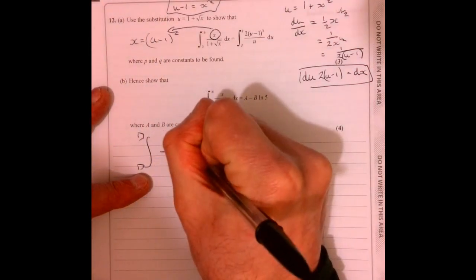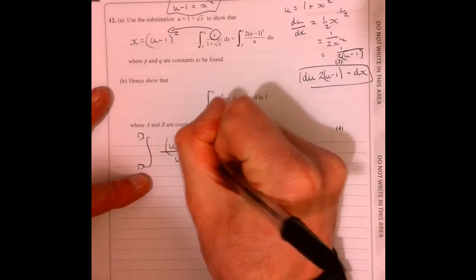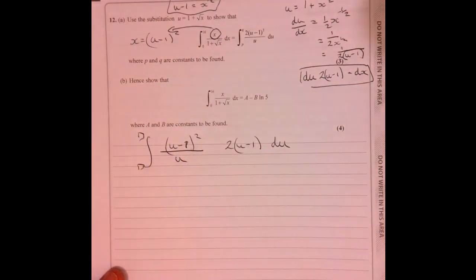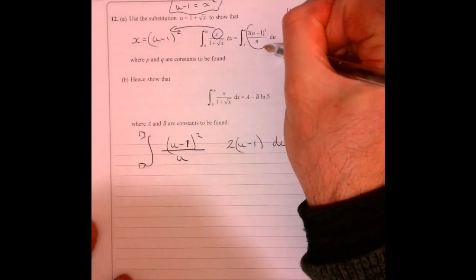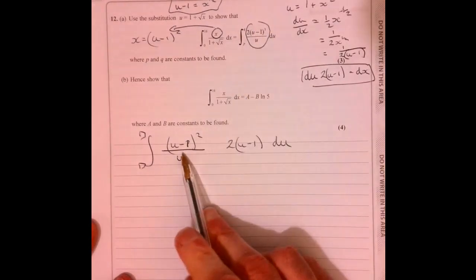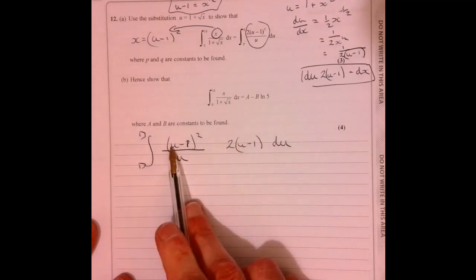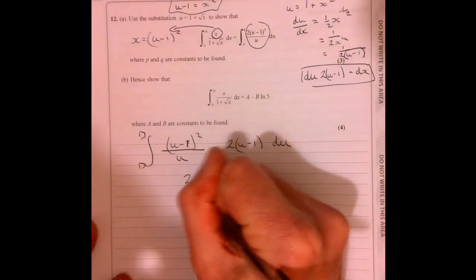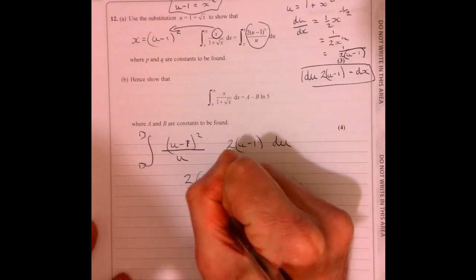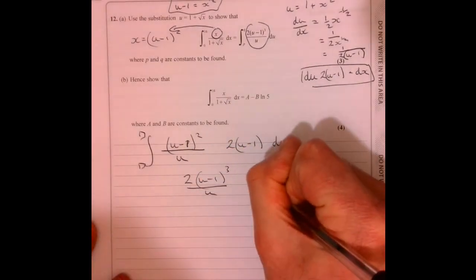So x must be equal to u minus 1 square. So I'm going to put that minus 1 square. And now this is the same as this bit just here. Here we go. That's the same as that. I'm just going to multiply by. So what have we got? I've got u minus 1 to 3 now. And then it's all over u du.